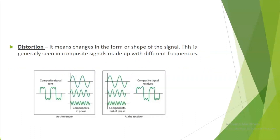Second, distortion means a change in the form or shape of a signal. It generally applies to composite signals. At the receiver side, there is a change in the shape of the signal — that is distortion.